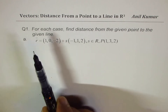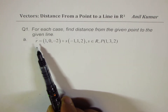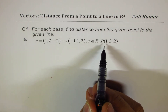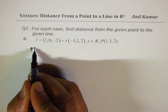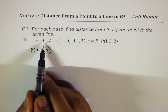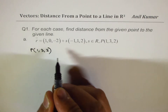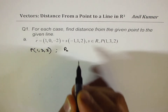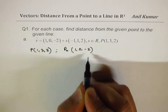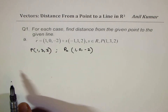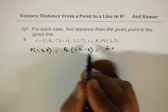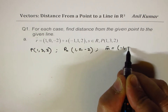Question number one, A. R equals (1, 0, minus 2) plus S times (minus 1, 1, 2). So we can say the external point P is given to us as (1, 3, 2). Let's call the point on the line as P0, which is (1, 0, minus 2). The direction vector M is given to us as (minus 1, 1, 2).